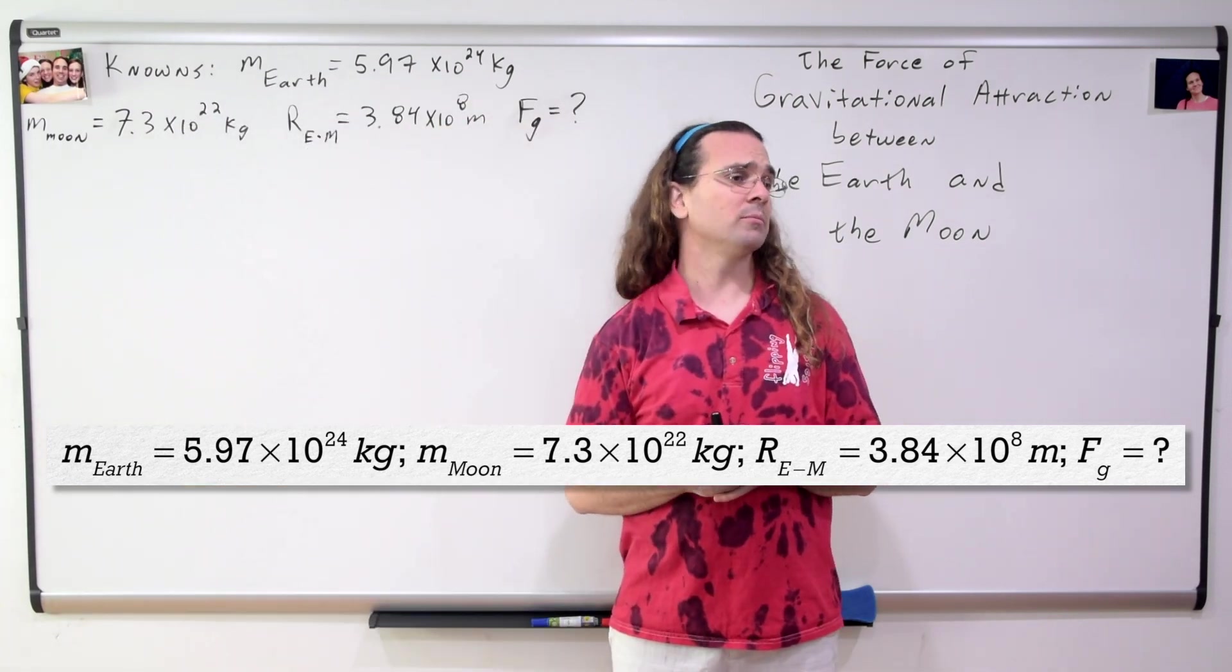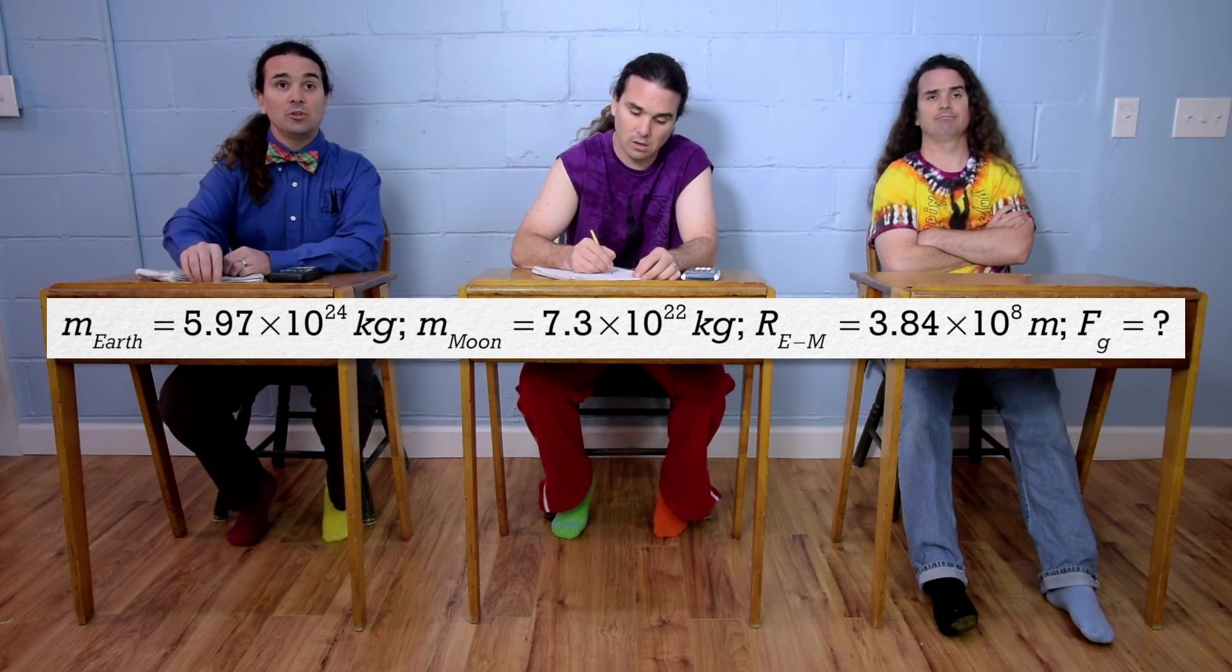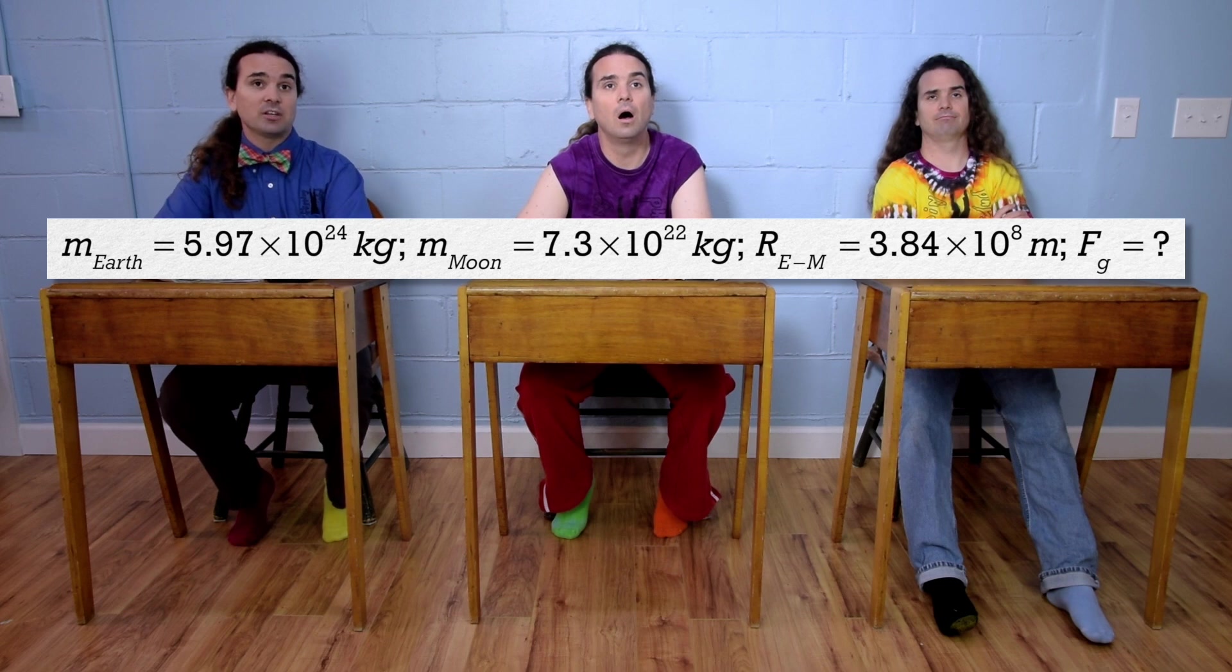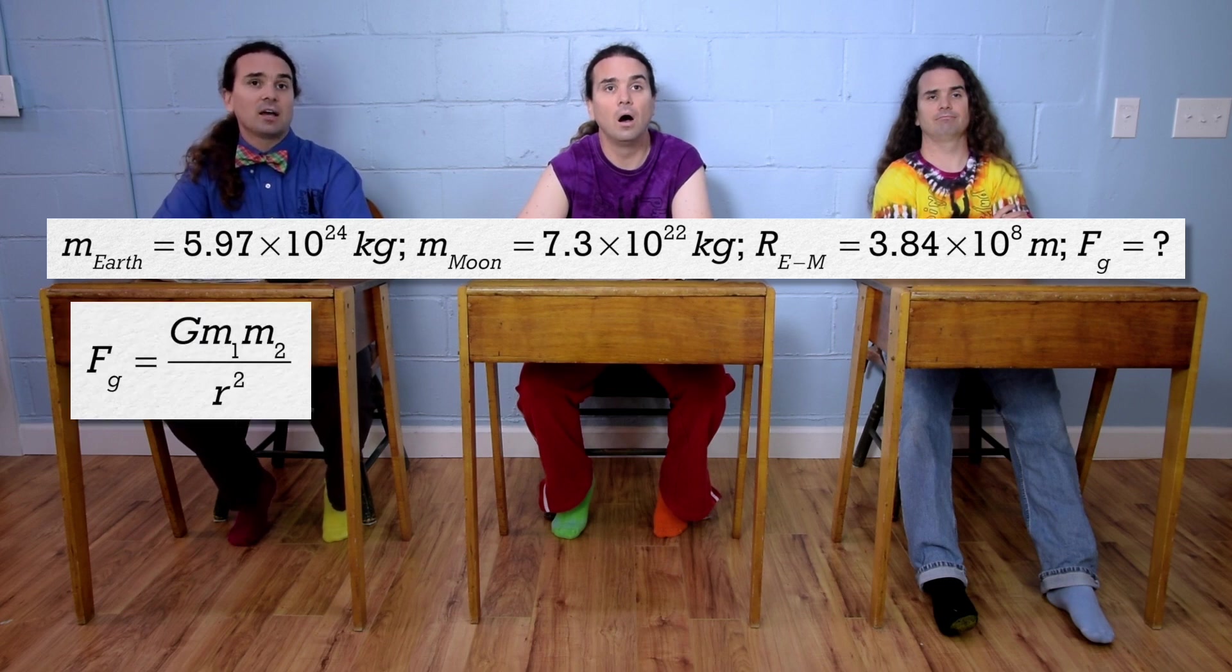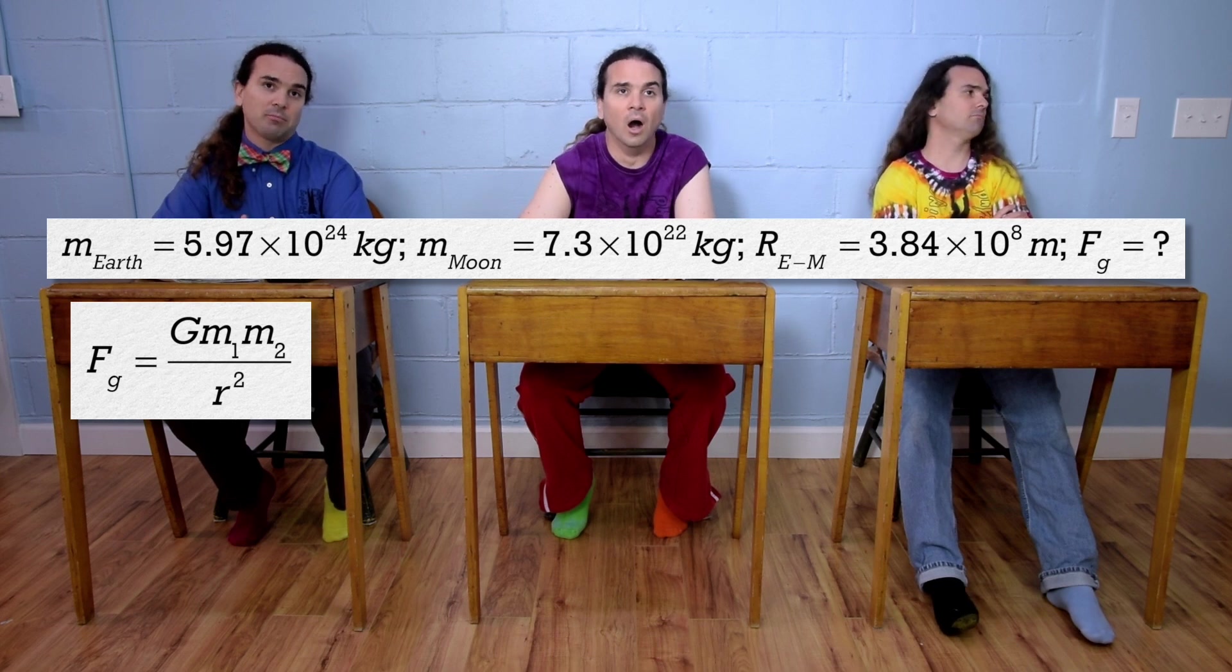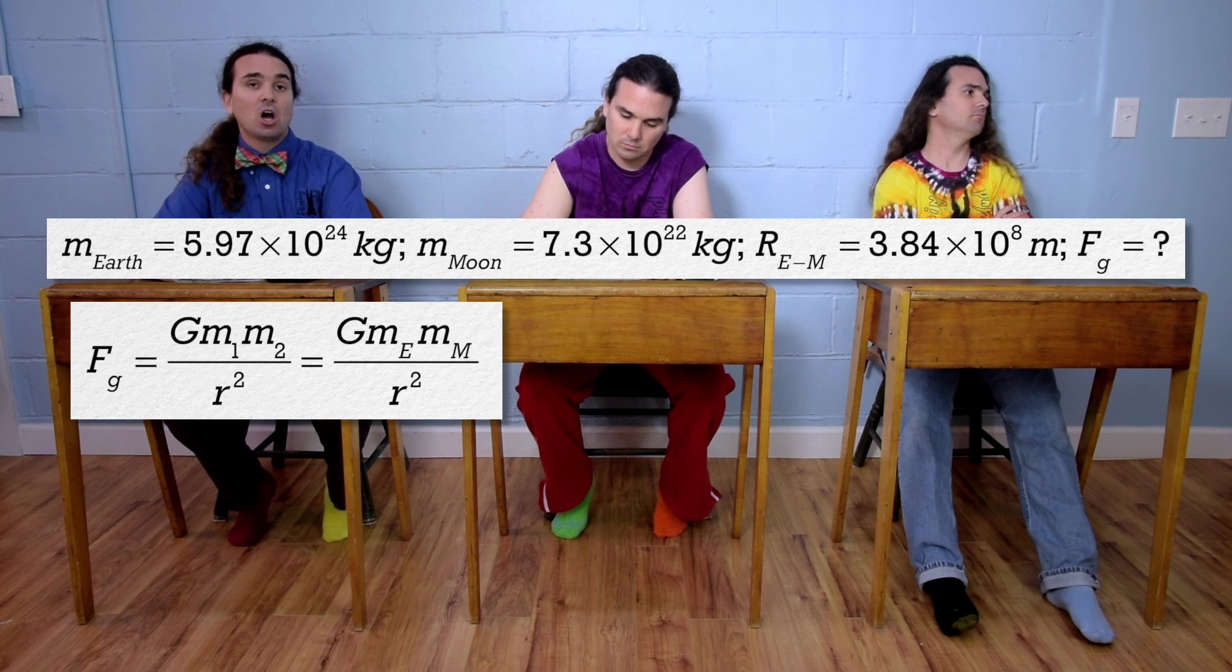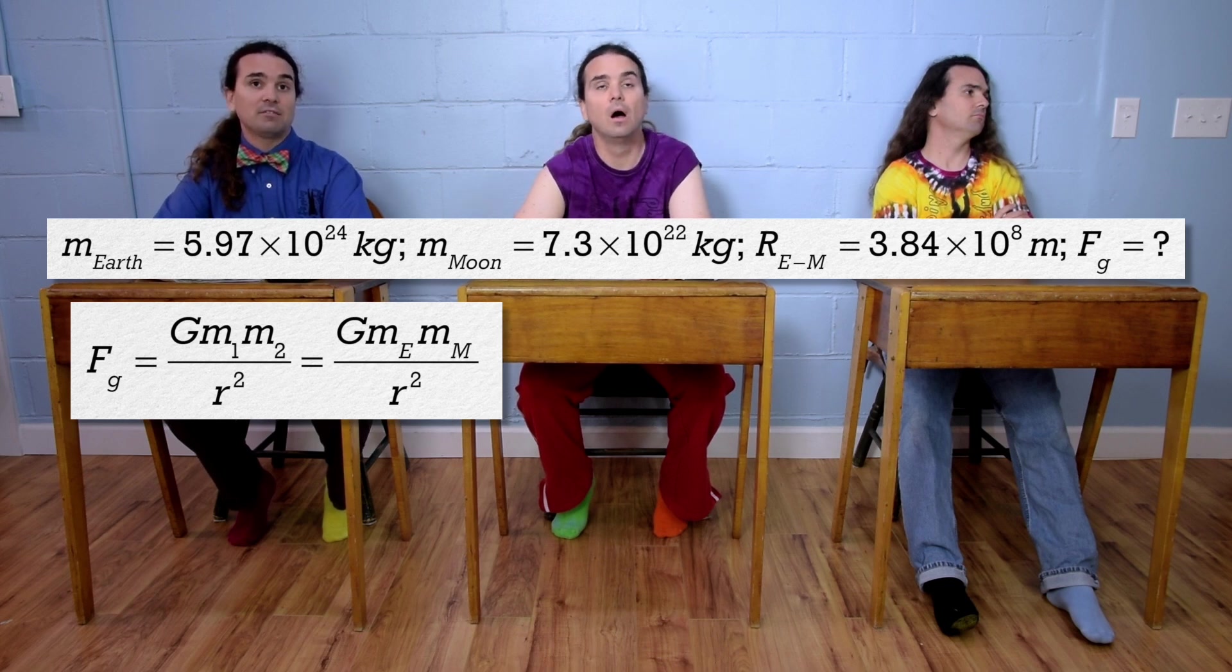Billy, please solve the problem. Well, we need to use Newton's universal law of gravitation, or the big G equation. Force of gravity equals the universal gravitational constant, or big G, times the mass of the Earth times the mass of the Moon, all divided by the square of r, which is the distance between the centers of mass of the two objects.